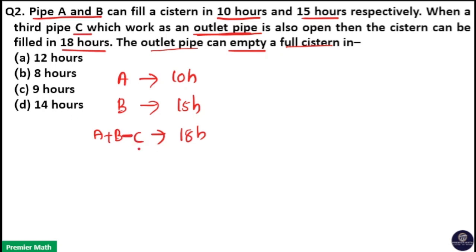That is, C is emptying the tank. So when A, B, and C are working together, it takes 18 hours to fill the tank. Here A and B are inlet pipes which fill the tank, and C is an outlet pipe which empties the tank. We have to find in how much time C will empty the tank.